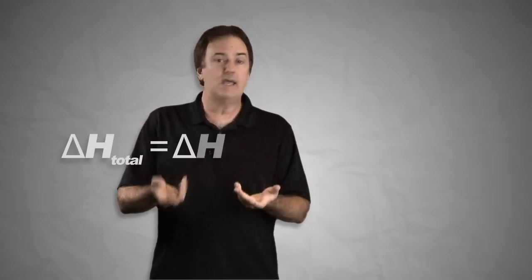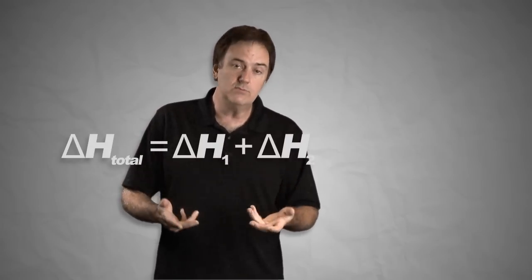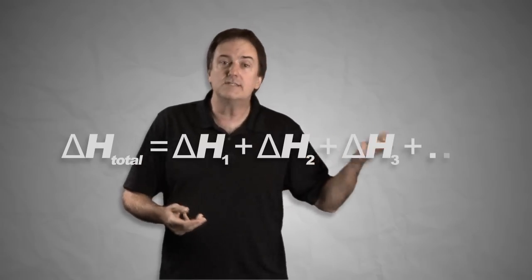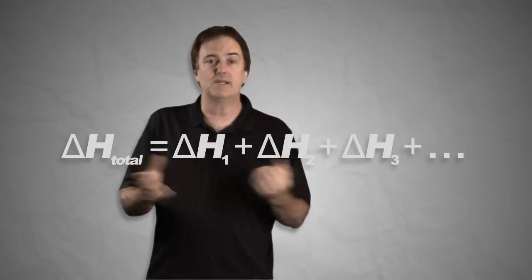So how do we write it? It's pretty simple. We write that the delta H total is equal to delta H1 plus delta H2 plus delta H3, et cetera. However many steps you got, you add them together.